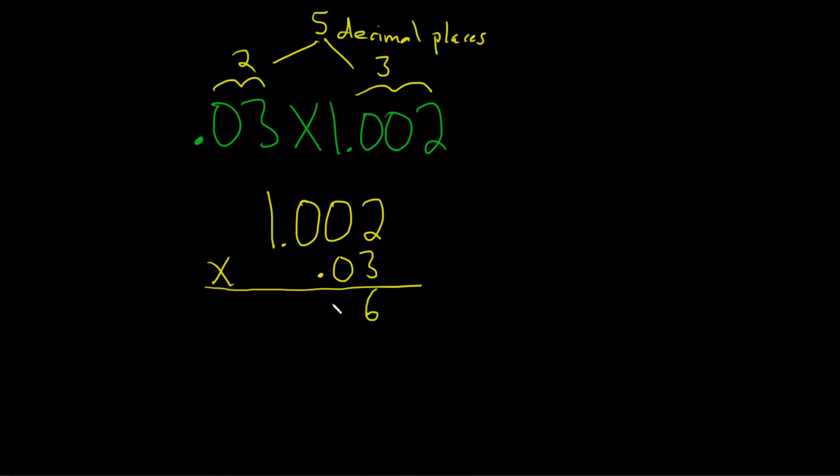3 times 0 is 0. 3 times 0 is 0. 3 times 1 is 3. I don't know why I'm saying boom.